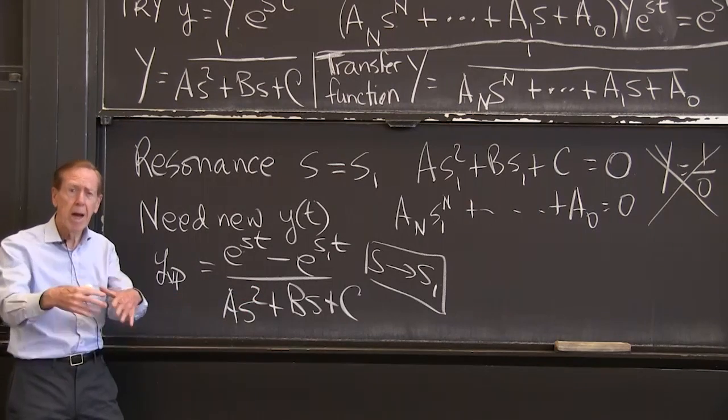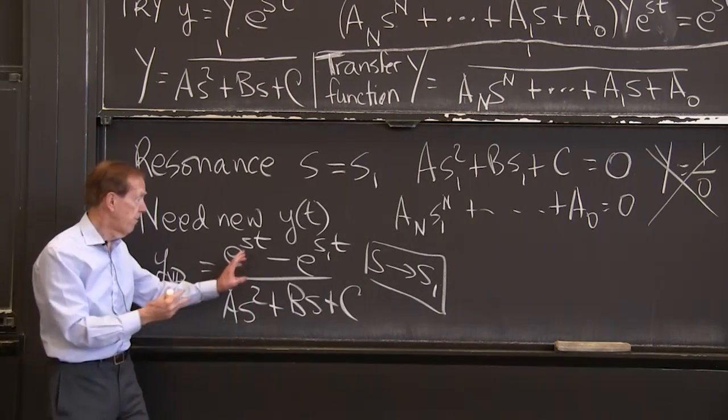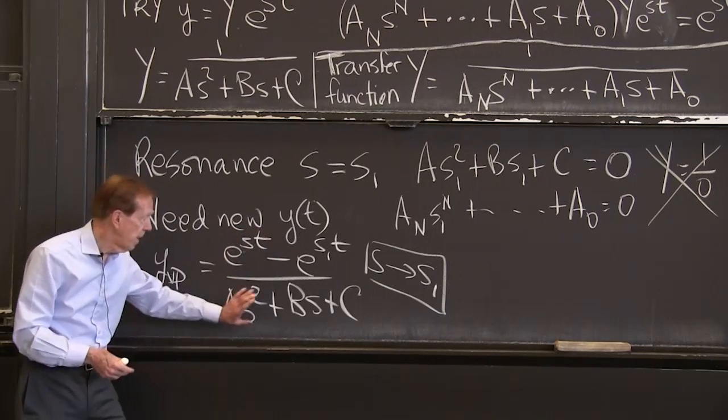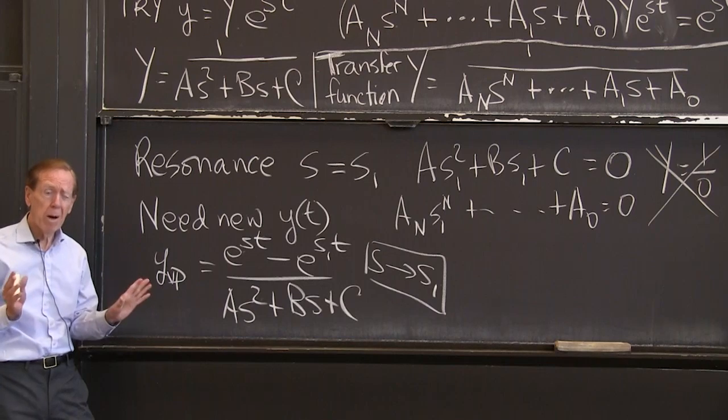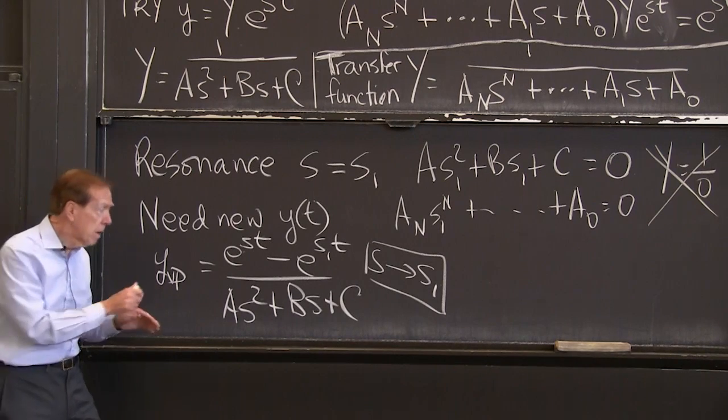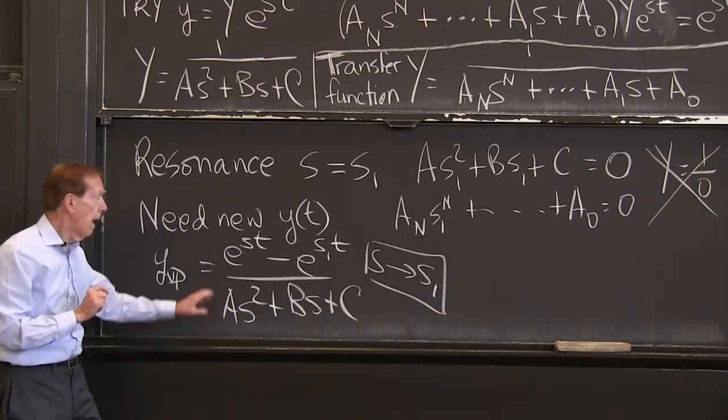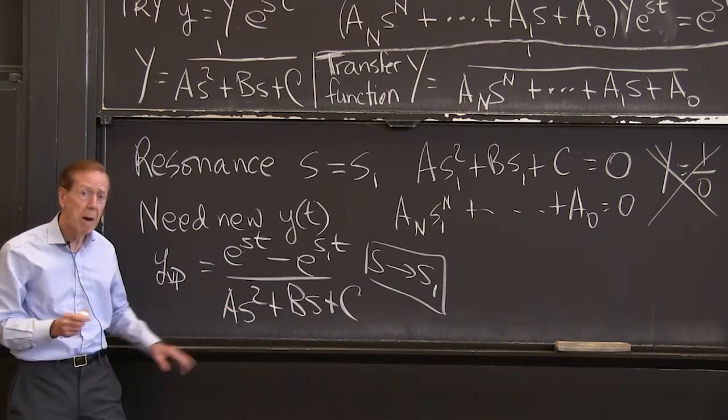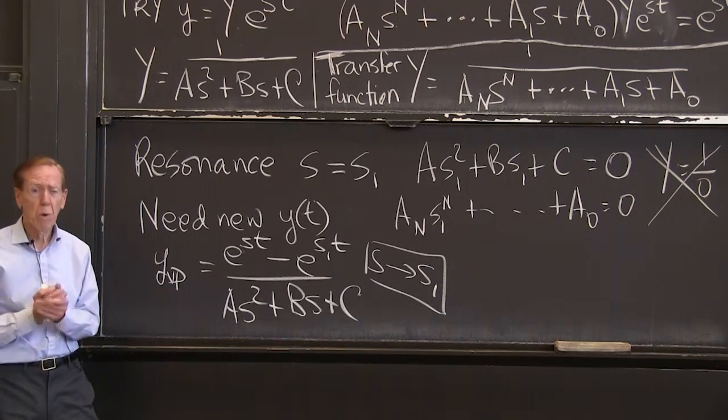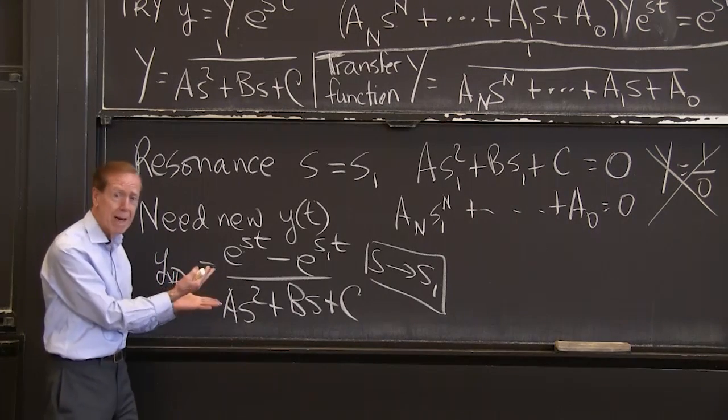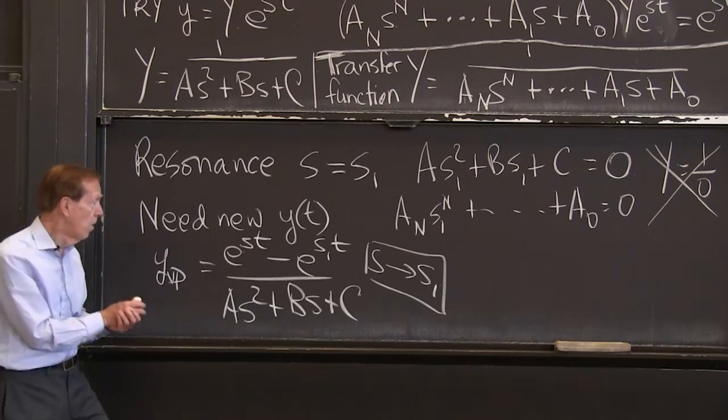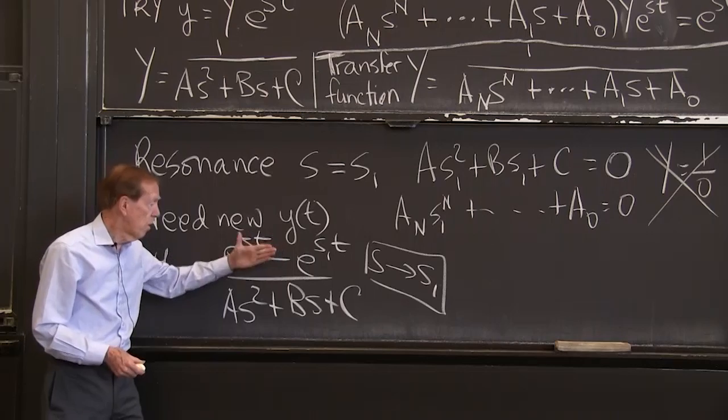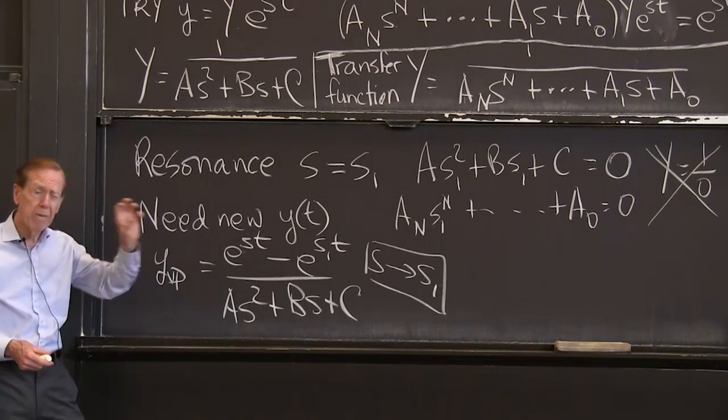So e to the s1t is a null solution. This is what I would call a very particular solution. It's very particular because at t equals 0, it's 0. So do you see what's happening here? The question that resonance happens when s approaches s1. Resonance is s equal to. Resonance itself is at the thing. Now we let s sneak up on s1 and we ask what happens to that formula.